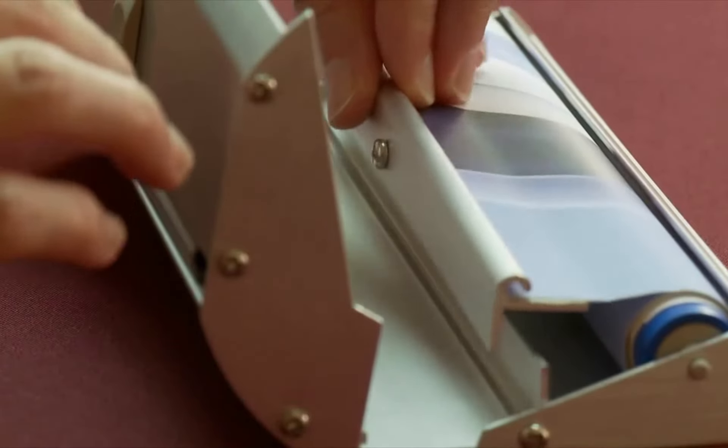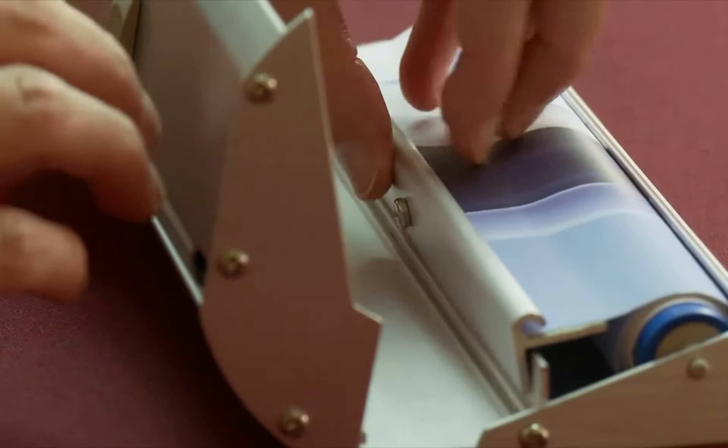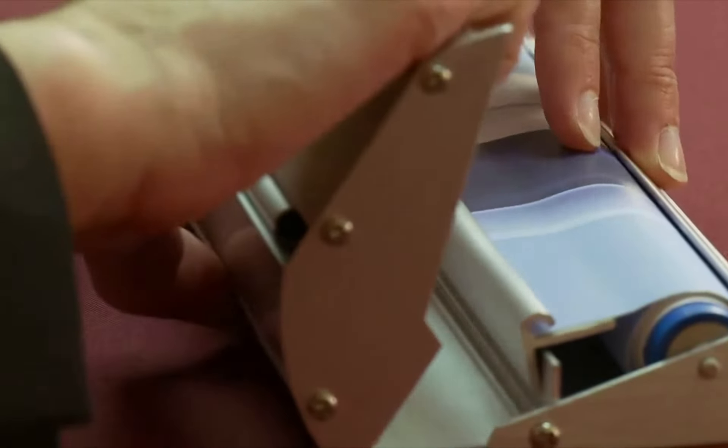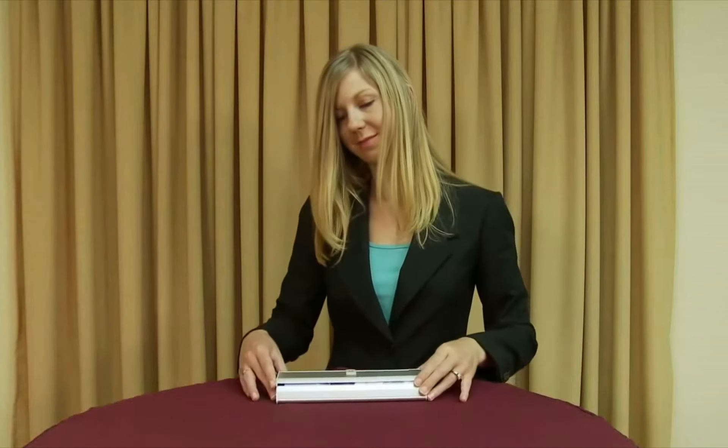Secure the graphic by inserting the screw located on the banner rail into the hole located on the back ridge of the base unit and closing the lid of the base unit.